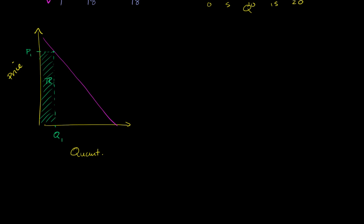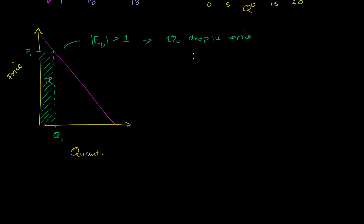Now let's assume that in this part of the curve, the price elasticity of demand is greater than 1 in absolute value — so we are elastic. The absolute value of the elasticity of demand will actually be a negative number, but the absolute value is greater than 1, which means for a 1% drop in price, you have a greater than 1% increase in quantity.